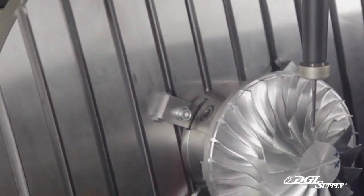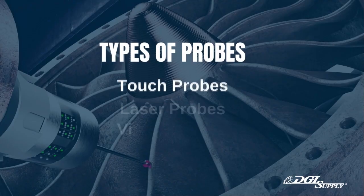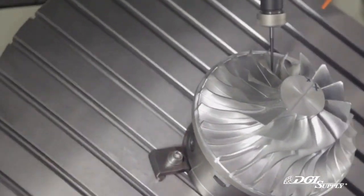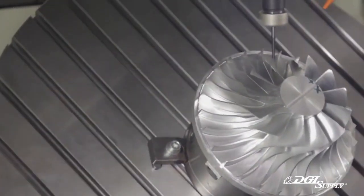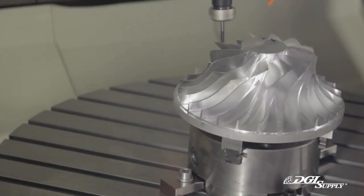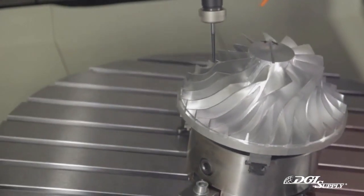There are several different types of probes available, including touch probes, laser probes, and vision probes. The type of probe that is used will depend on the specific needs of the application and the capabilities of the CNC machine.